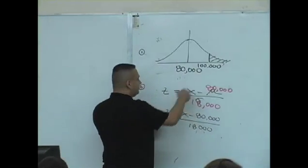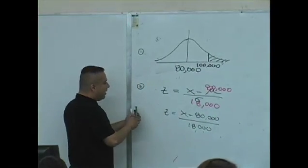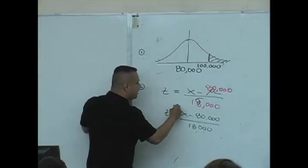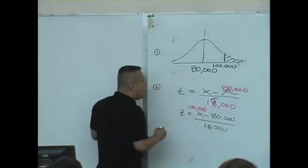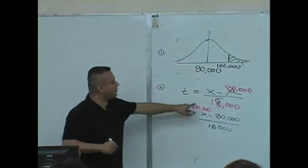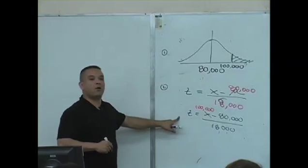So if I plug in $100,000, I'm converting that $100,000 to a Z score.